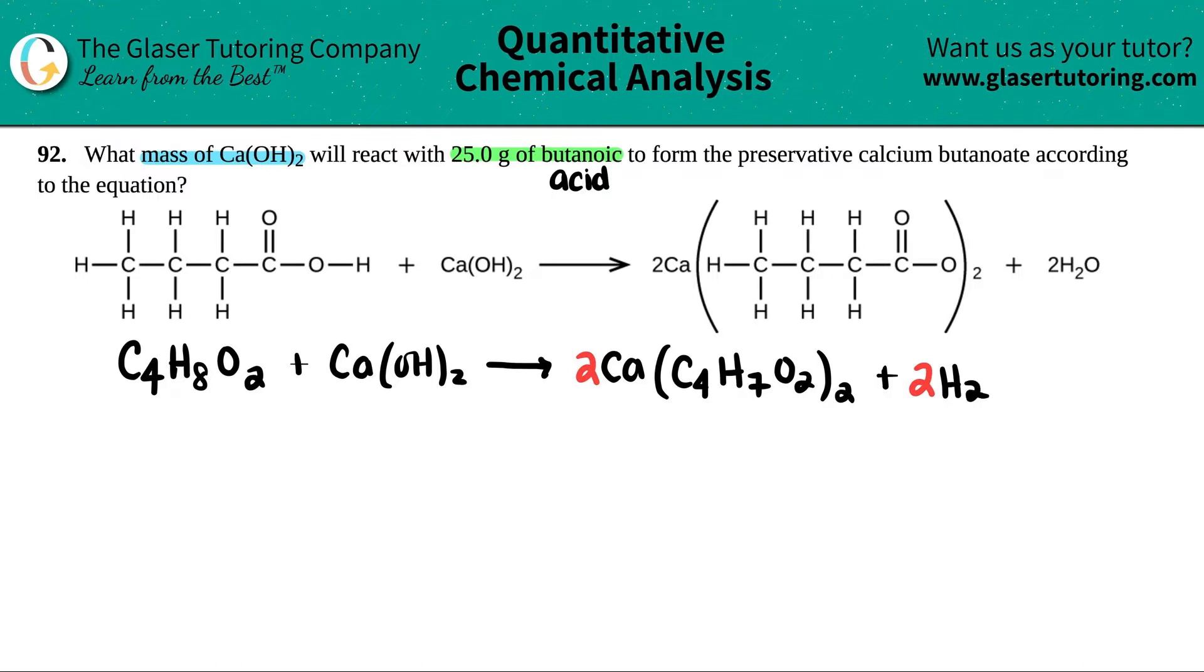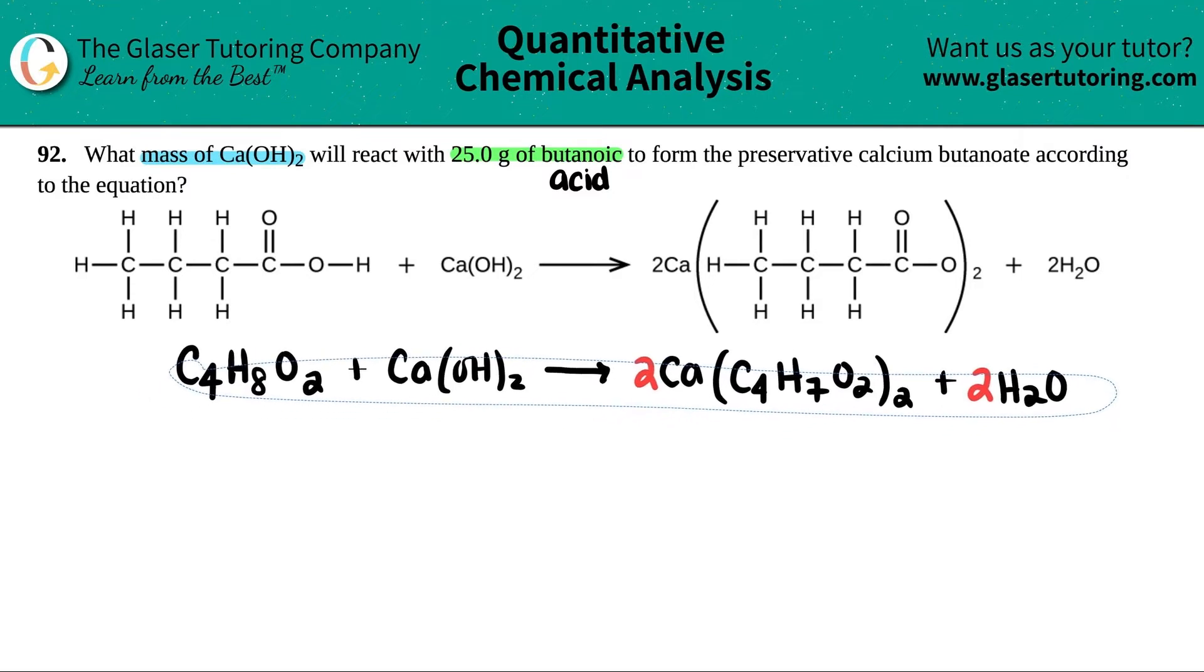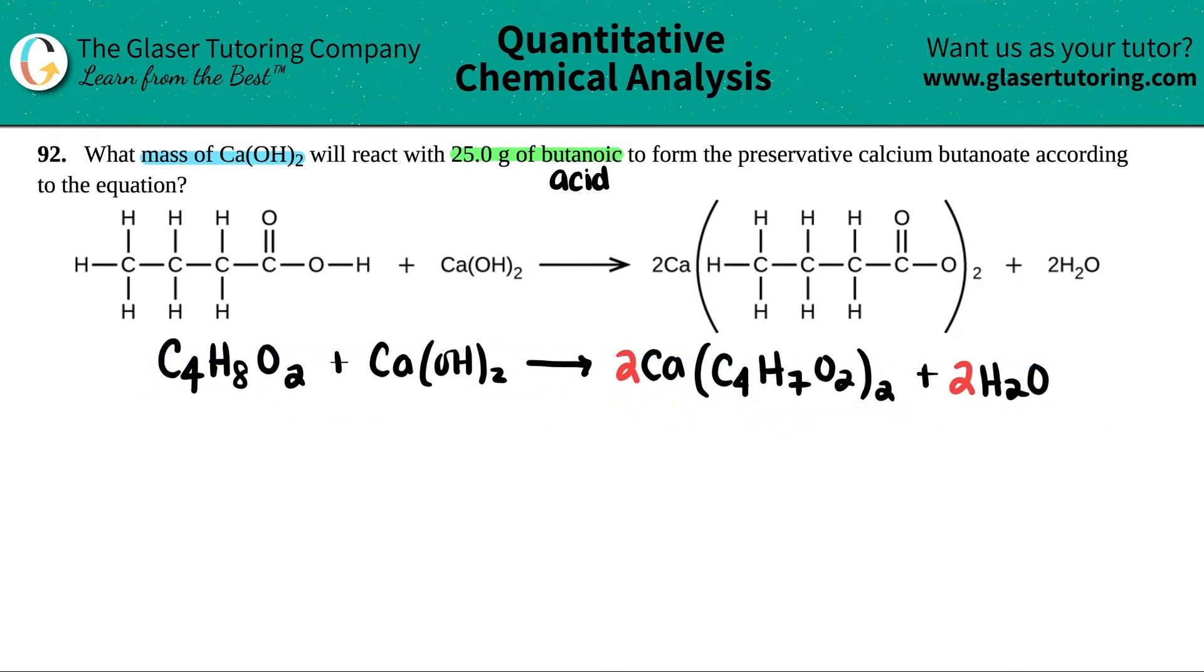And then plus we have 2H₂O. Okay, cool. I think this is much better to work with. Much, much better to work with here. Let's write down what we have. They only told us that we're starting off with 25 grams of butanoic acid. That's this guy, right? That was the starting material. And we want to know what's the mass of the calcium hydroxide. So that's this guy.